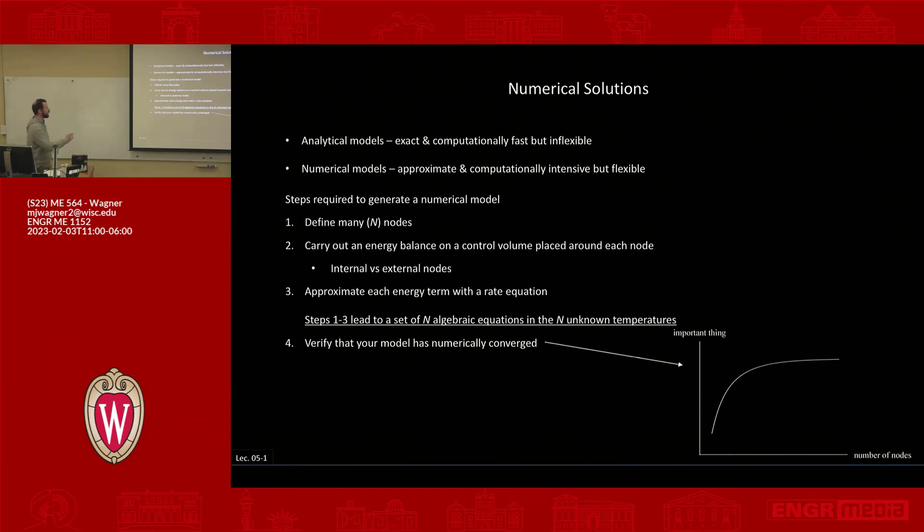So when we say N nodes, like I said, you want to have enough nodes so that your solution is stable, like it stops changing. And what that means is I have something that I'm trying to model called that important thing. So I have some important thing. And maybe that's like the temperature in a certain node, or maybe it's heat transfer across the device, or whatever it may be. So you have this thing you're measuring, and it could change based on the problem.